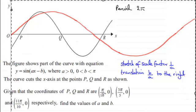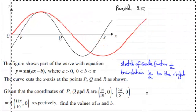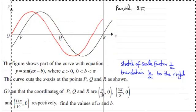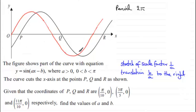Now when we stretch this graph by a scale factor of 1 over a, we reduce the period. Now the period of this graph is exactly the same as the period from P to R, because we're going to translate it to the right in a moment.